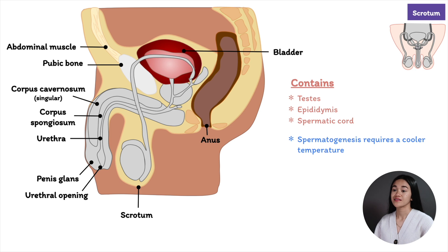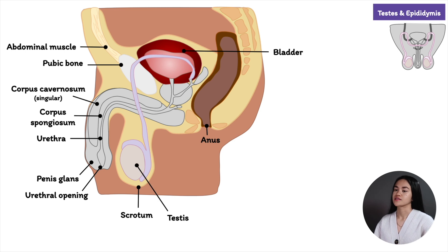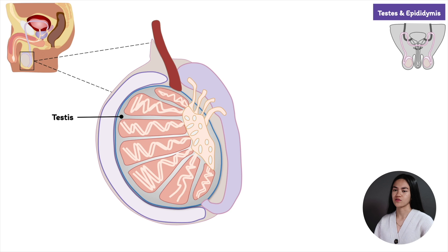Now let's talk about the testes and epididymis. They are paired structures in the scrotum. The testes are the site of spermatogenesis — sperm production — and also hormone synthesis. The epididymis are located at the head of each testis, loosely attached outside of the testes, and serve as a storage reservoir for sperm.